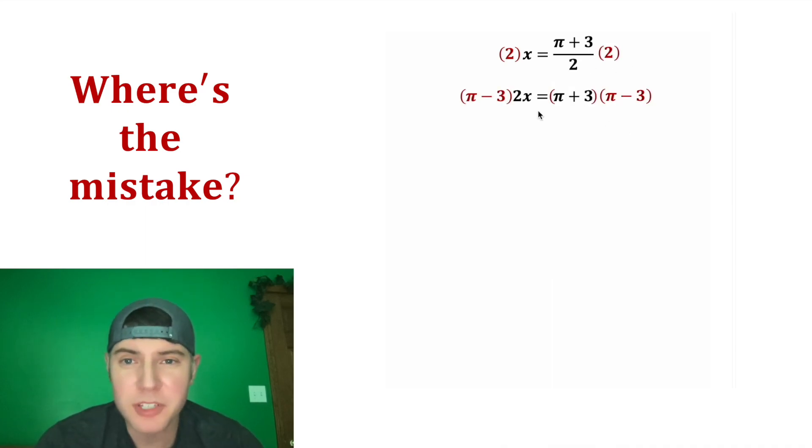And then from here let's multiply both sides by pi minus 3. So on the left hand side we're going to distribute. We have pi times the 2x which is equal to 2 pi x, and we have the negative 3 times the 2x which is equal to negative 6x.